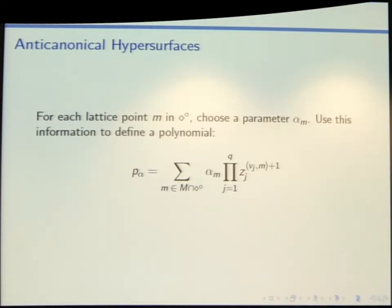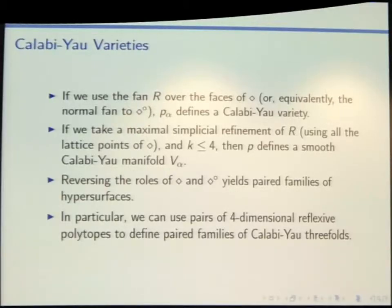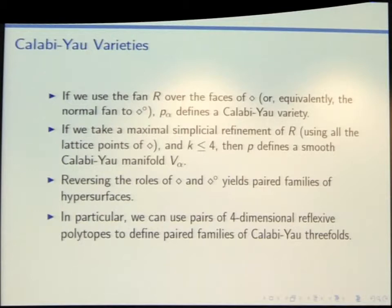My motivation is that I really specifically want to pull out the anti-canonical hypersurfaces; for quartics in P3 I really do want to work with O(4) and not O(1). The alpha_m's here are generic coefficients for every monomial, giving a whole family of polynomials. So if we do have a pair of reflexive polytopes and we take the fan over the faces of one and use this expression for polynomials, we'll get the anti-canonical hypersurfaces in this toric variety. We've carefully chosen the toric variety and the polynomial so that it'll actually be Calabi-Yau.